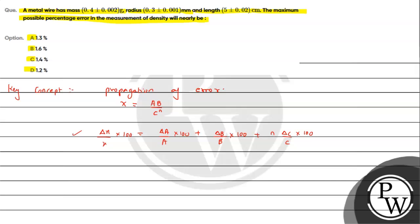This is our method to calculate the maximum percentage error. From the question given, we calculate the maximum possible percentage error in measurement of density. First, density, which we denote as rho, is nothing but mass upon volume. We have a metal wire given, so we write mass upon volume, which can be written as mass upon area times length. Since the wire can be considered to be a cylindrical body, we can write it as m upon pi r squared l.